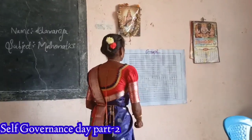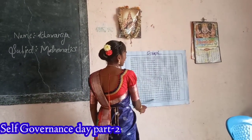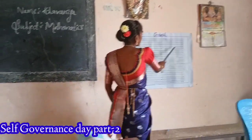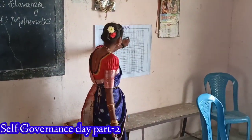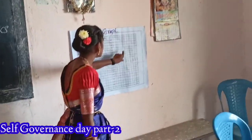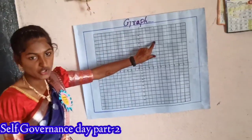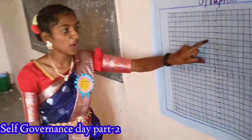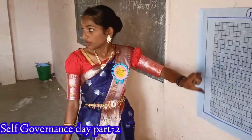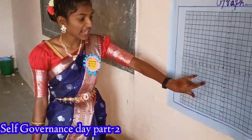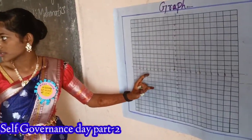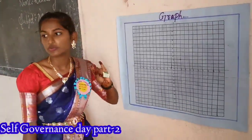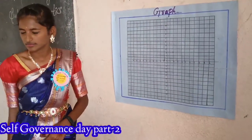This is the x-axis and this is the y-axis. This is called quadrant. Quadrant one has positive values. Quadrant two has positive and negative values. Quadrant three has two negative values. Quadrant four has positive and negative values.